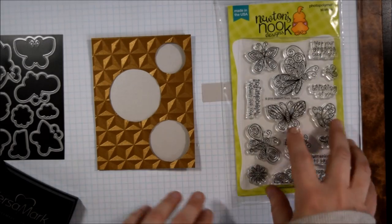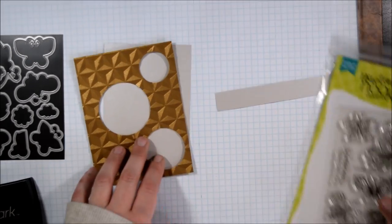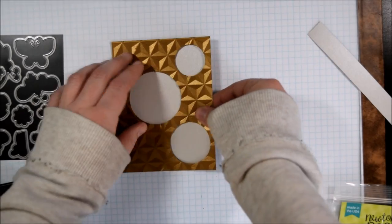So I'm going to use the embossing folder after I die cut the three circles. If you try to die cut the three circles after you do the embossing, then you're going to flatten out some of your embossing and that's not what I want here.